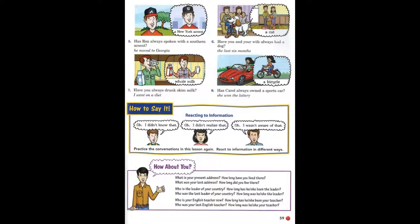8. Has Carol always owned a sports car? No. She's owned a sports car since she won the lottery. Before that, she owned a bicycle.